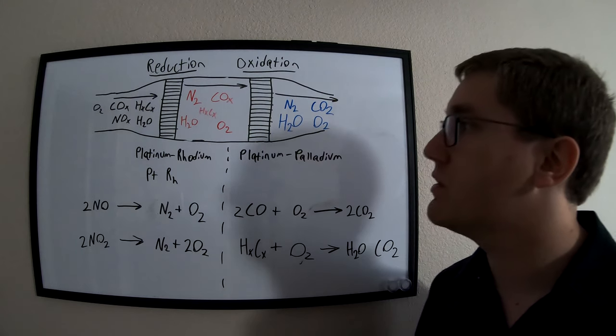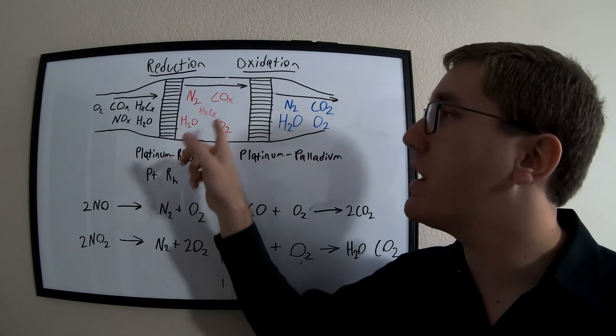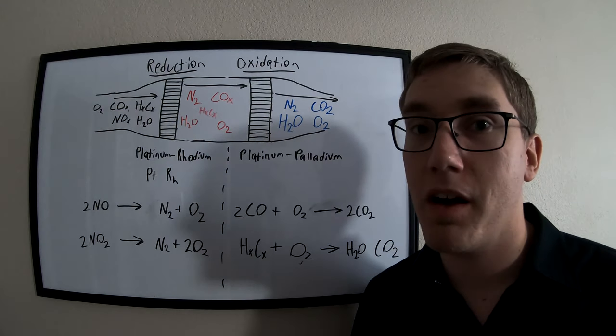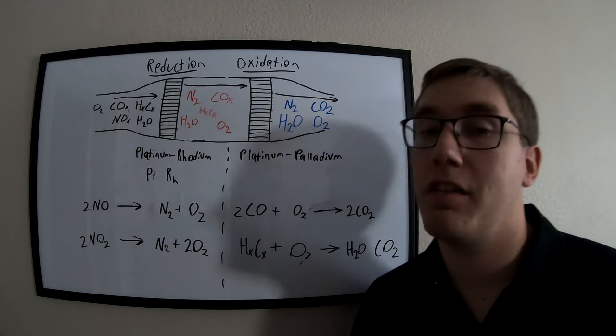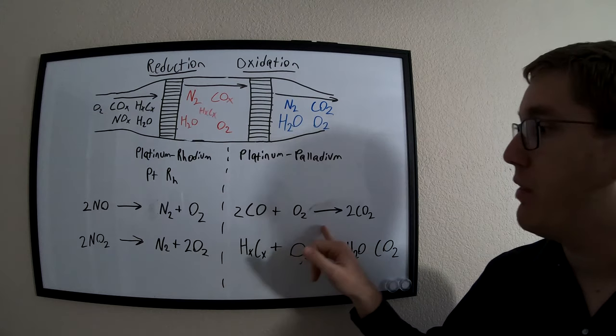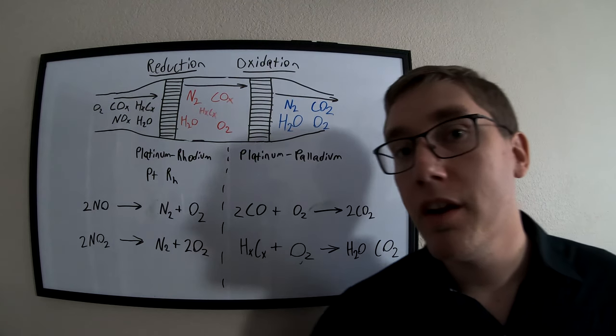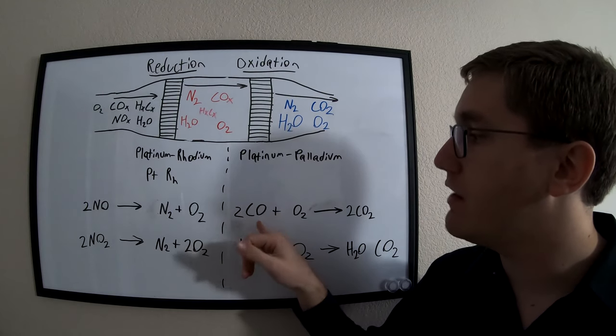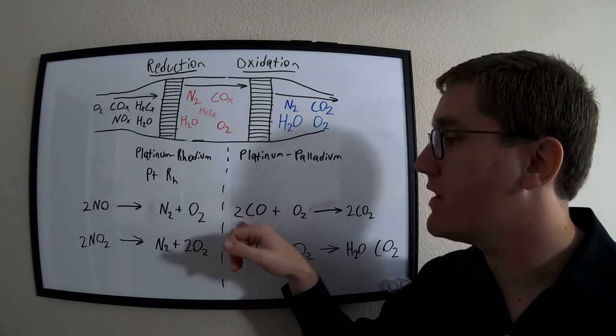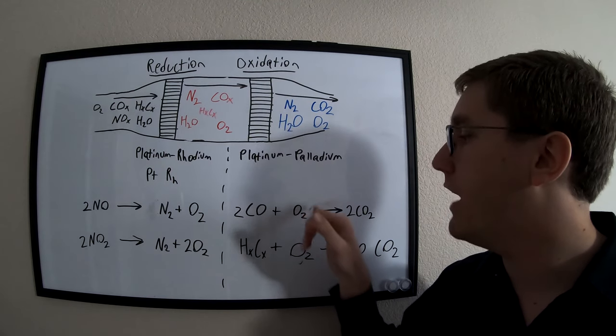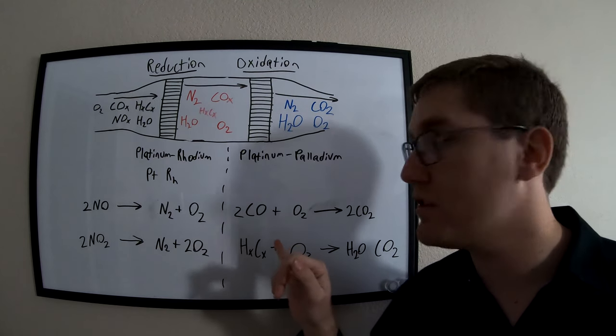So the material here in the oxidation phase wants to combine with carbon and oxygen. So in the case of carbon monoxide, we will end up having two CO molecules and we will have one single oxygen molecule.